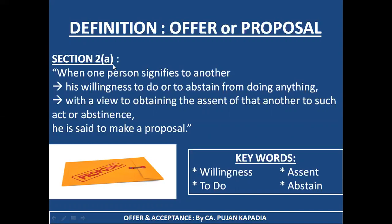Offer or proposal has been defined under Section 2, clause A. When one person signifies to another — so basically there are minimum two persons required — one party is signifying to another his willingness to do or to abstain from doing anything. With a view to obtaining the assent of that other person to such act or abstinence. For example, if I am asking a venture capitalist to come and invest in my company, I want that he should give assent — confirmation that yes, he is ready to invest. This is said to be the proposal or the offer.